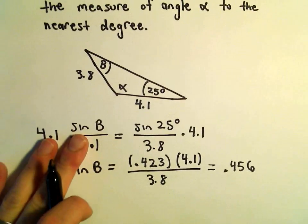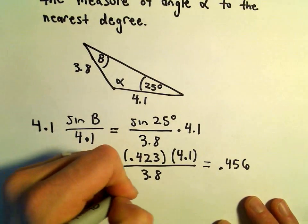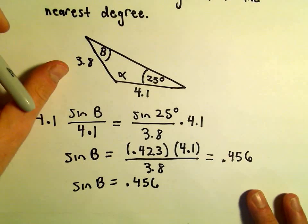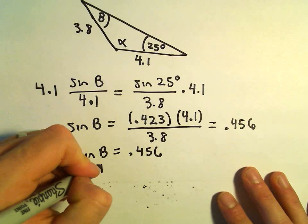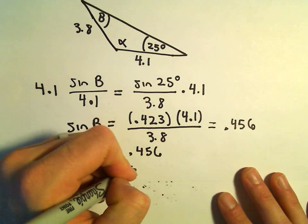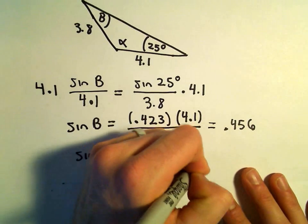So, we've got sine of b equals 0.456. All I'm going to do at this point is just take the inverse sine of both sides. So, we'll get b equals inverse sine of 0.456.